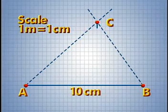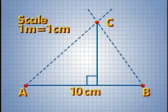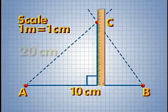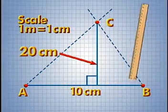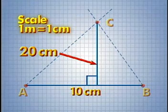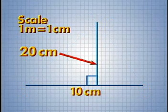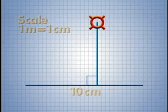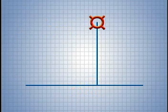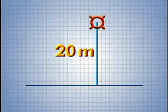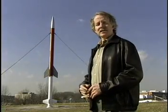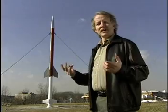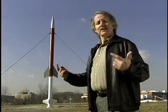Now we draw a line perpendicular from point C to the baseline. Using our metric ruler, we can measure the distance of this perpendicular line. Finally, using the scale of 1 meter equals 1 centimeter, we can approximate the distance the actual object was from the baseline. For our case, the object is approximately 20 meters away. In this example, we used a geometric technique called triangulation, which assumes that we know the baseline length and the two base angles.